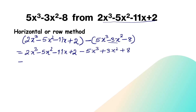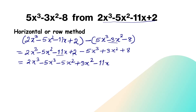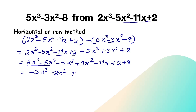Next, we bring together all like terms: 2x³ and negative 5x³; negative 5x² and positive 3x²; negative 11x has no like terms; and positive 2 and positive 8. Adding the coefficients: 2 and negative 5 give negative 3x³; negative 5 and positive 3 give negative 2x²; negative 11x remains unchanged; and 2 plus 8 gives positive 10. The final result using the horizontal method is negative 3x³ minus 2x² minus 11x plus 10.